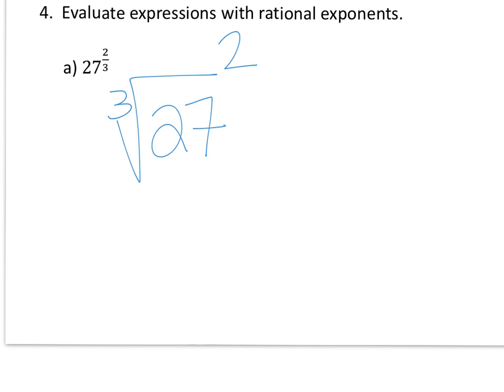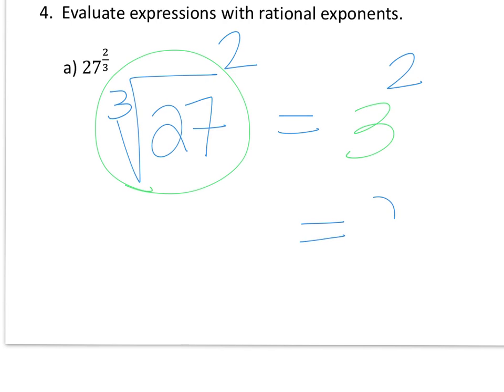We're going to first evaluate the radical, and the third root of 27 is 3. And then we have 3 squared, which of course equals 9. So 9 is our final answer.